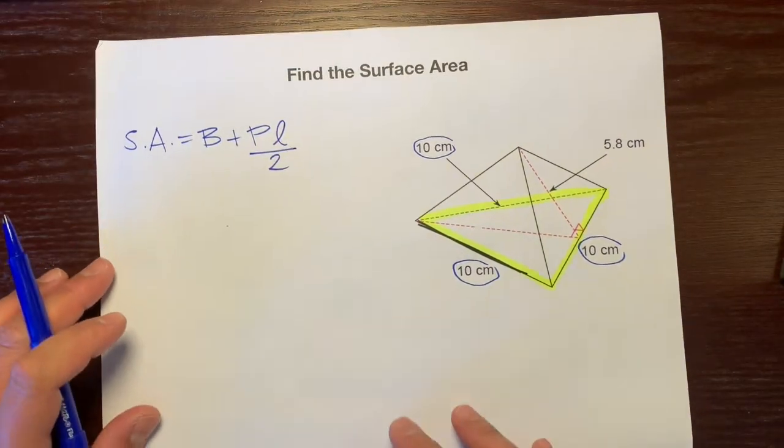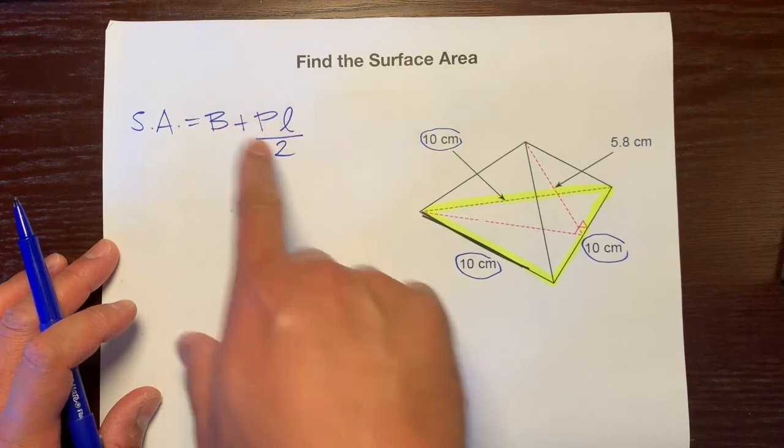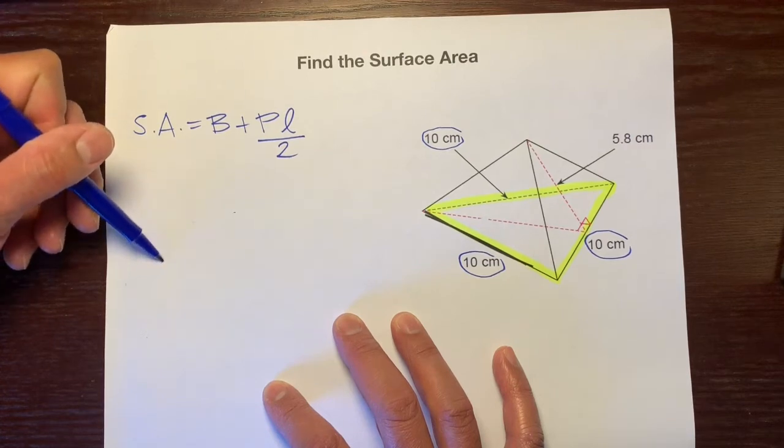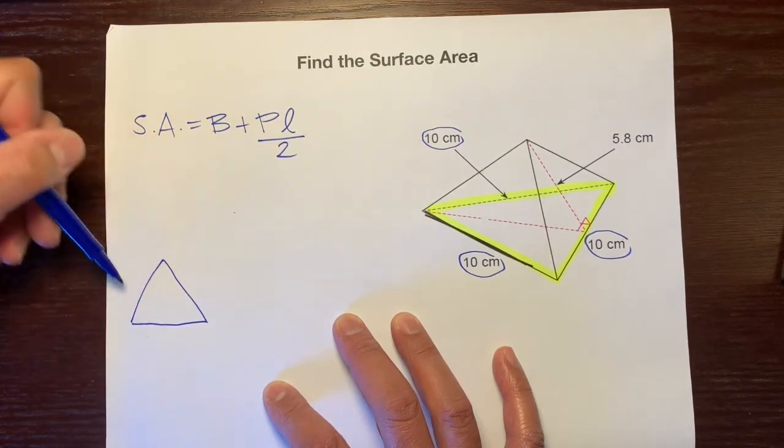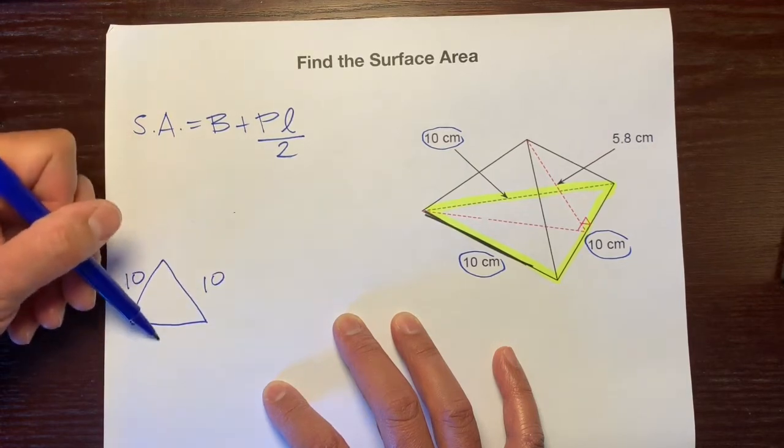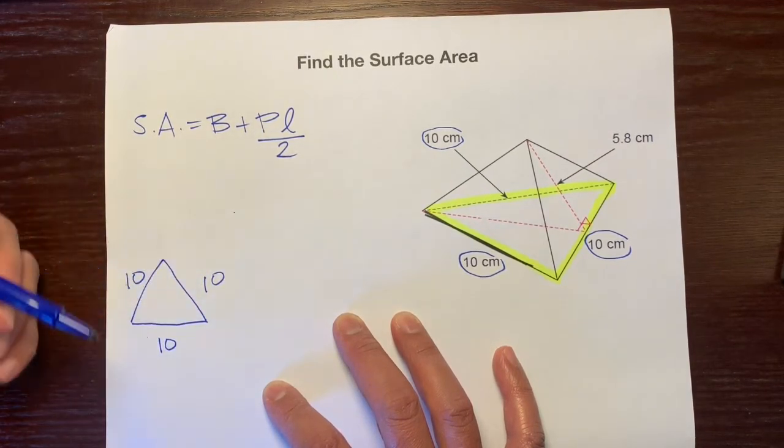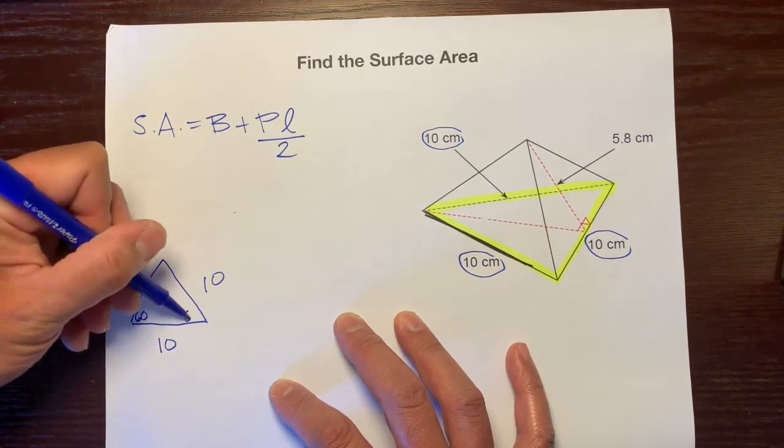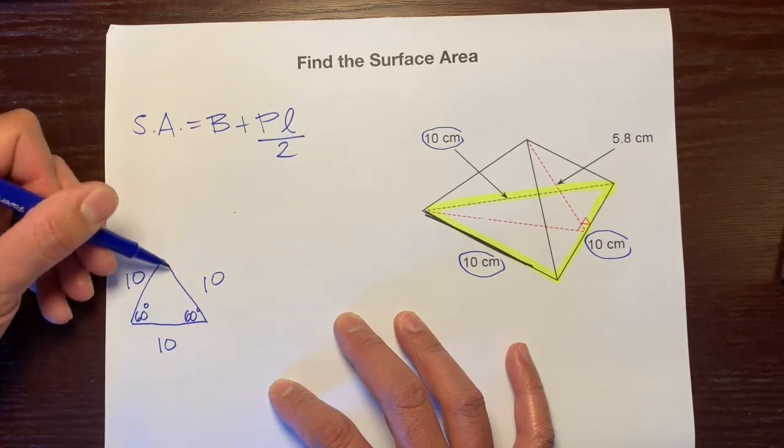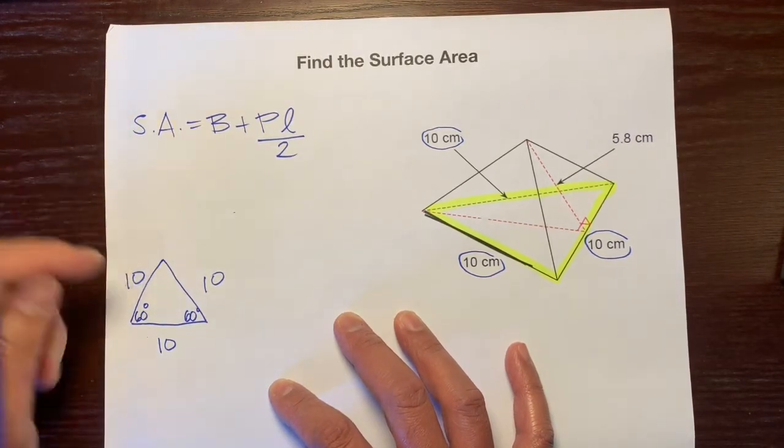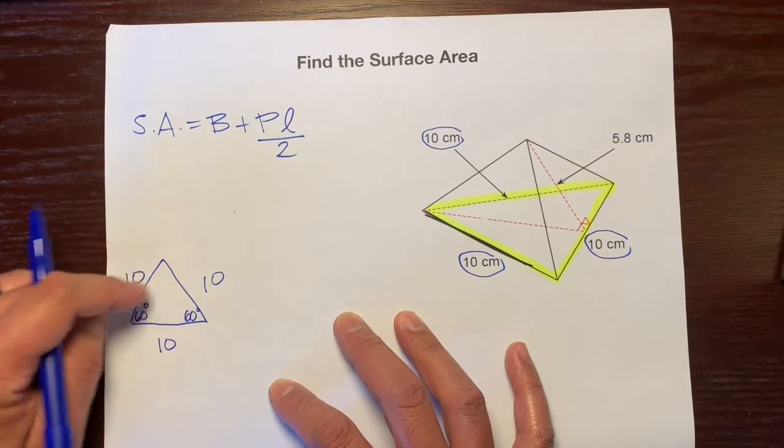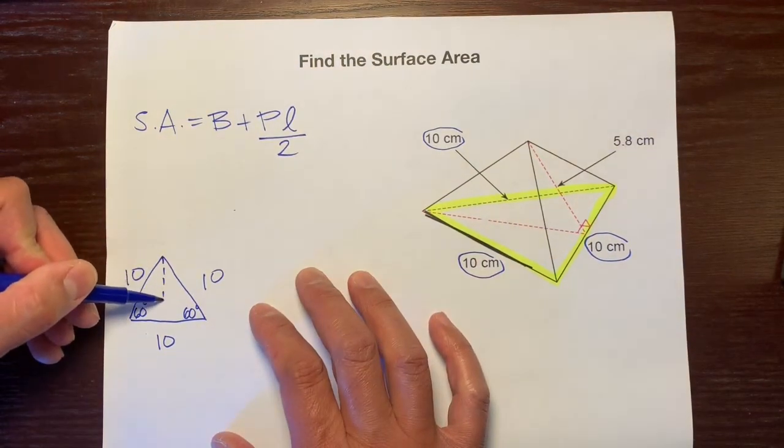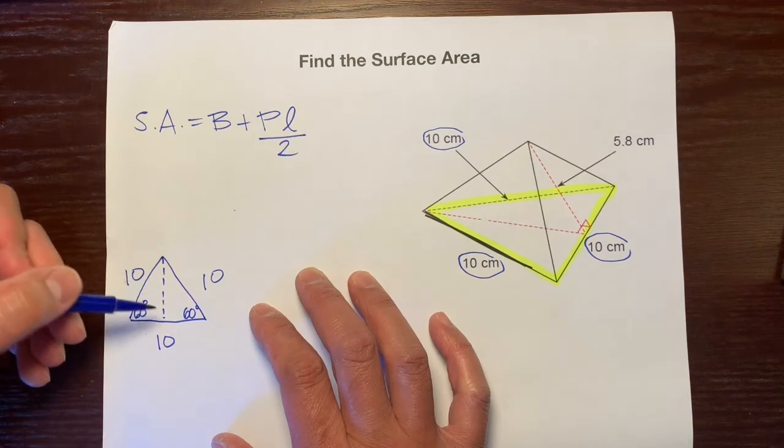First thing, let's figure out what the base area is. Our base is an equilateral triangle. Let me just draw it right here. We know that all the sides are 10. If it's an equilateral triangle, it's also equiangular, so that means every angle is 60 degrees. I'm gonna leave that 60 off right now, just knowing that all three of these are 60 degrees. They even drew a little line right here to give us a little hint.